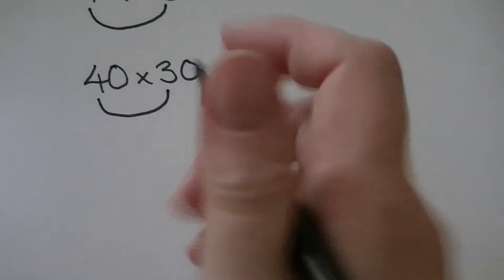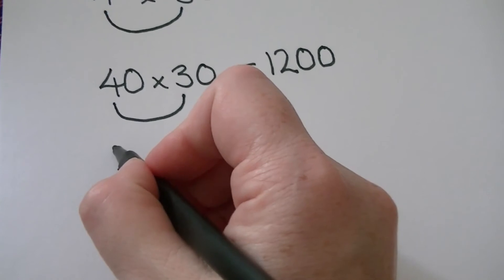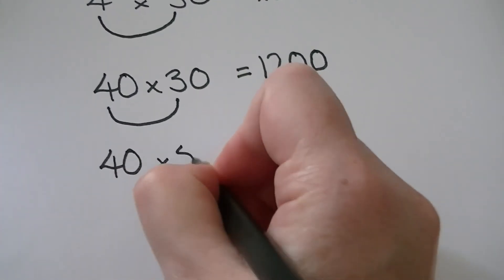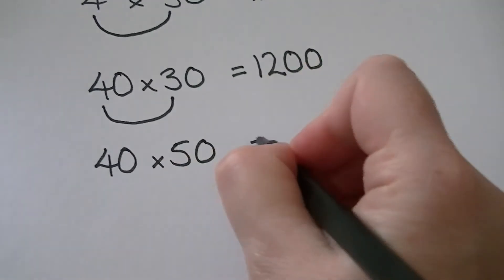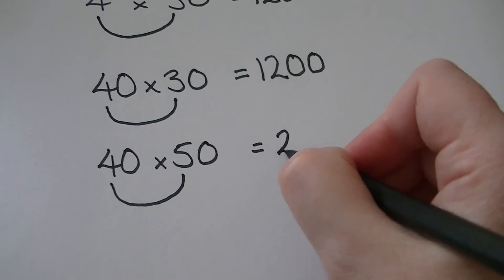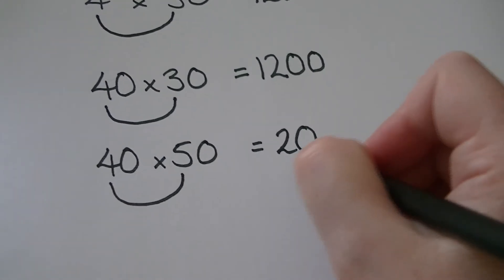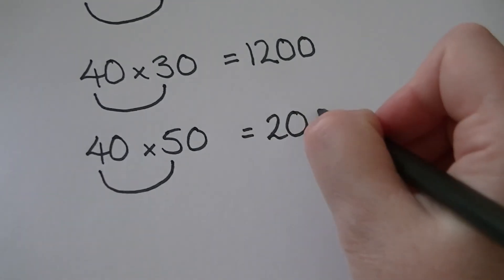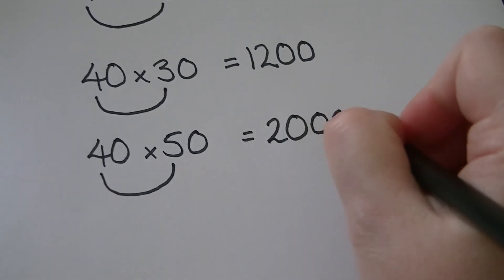One that often catches people out is things like 40 times 50 because when they do the tables bit, 4 times 5, the answer is 20 and they think I've already got one zero there. That doesn't matter. You've still got your two zeros on the other side which you have to add on.